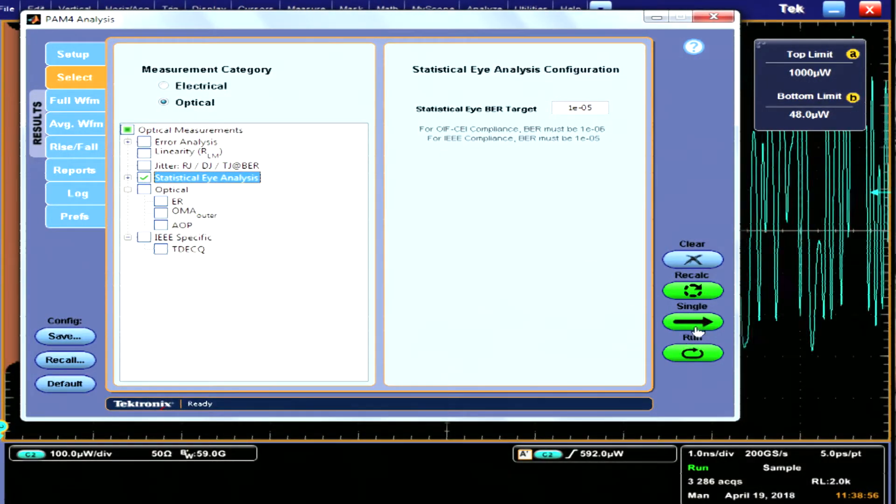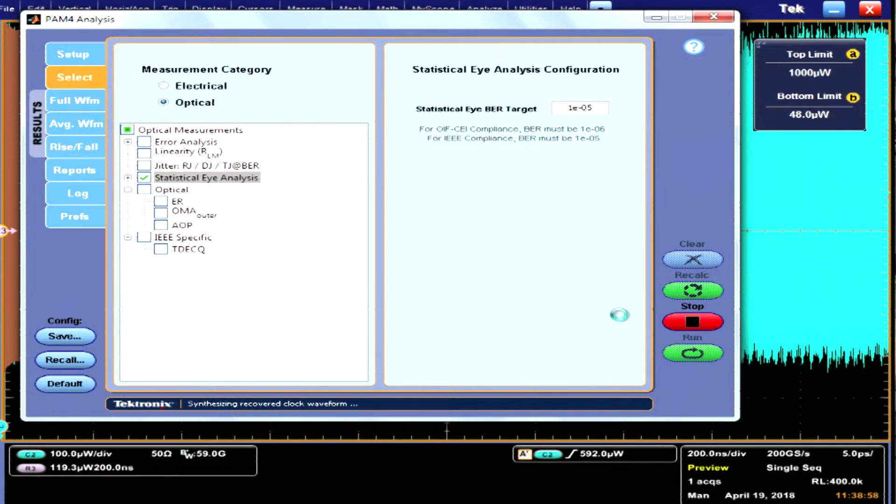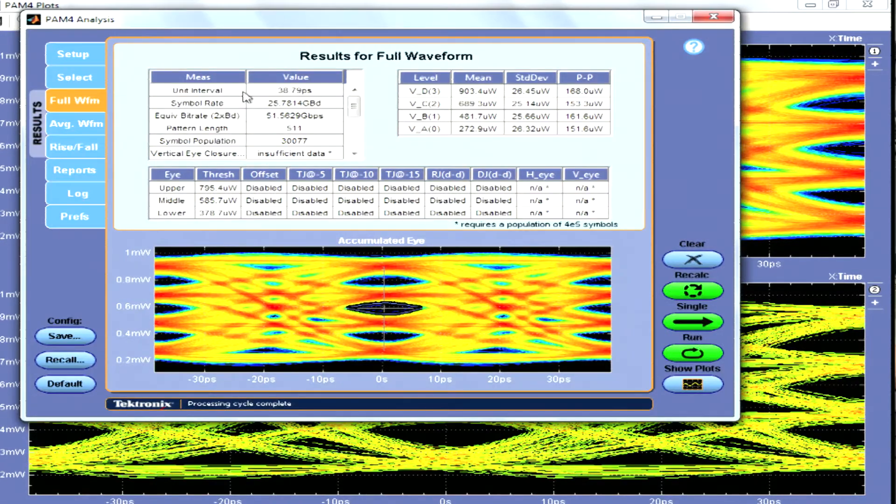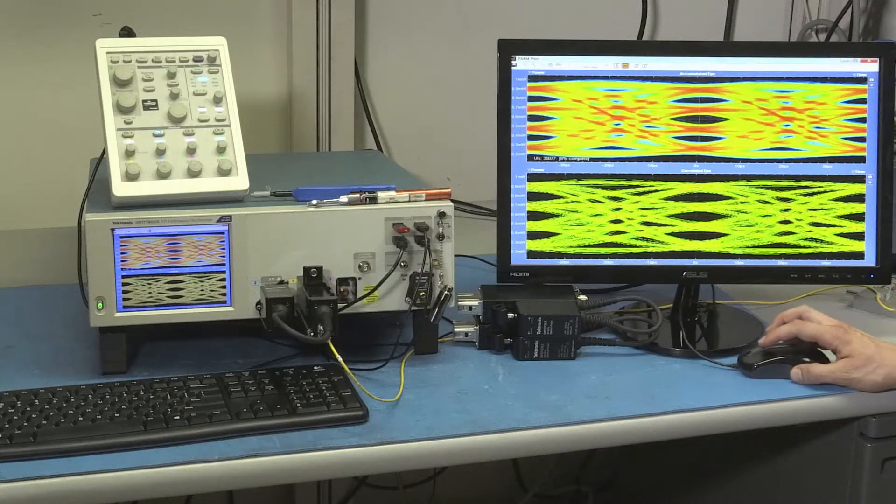So all I have to do now is basically hit a single run button. It will recover the clock, give you a couple of measurements like the symbol rate, baud rate, the pattern length that I have. And here's the eye diagram.